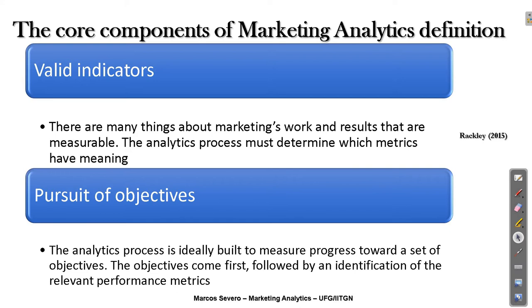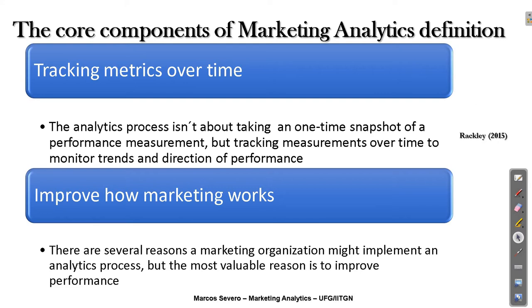The second core component is pursuit of objectives. The analytics process is ideally built to measure progress towards a set of objectives, and the objectives come first followed by an identification of the relevant performance metrics. The third core component is tracking metrics over time. The analytics process isn't about taking a one-time snapshot of a performance measurement, but tracking measurements over time to monitor trends and direction of performance.